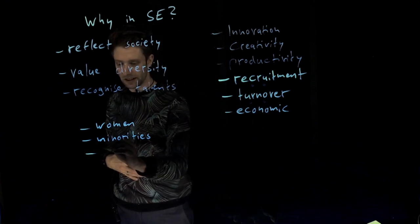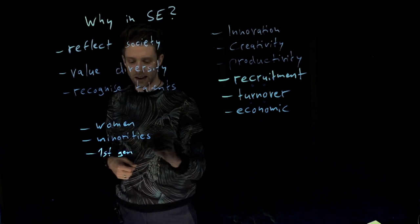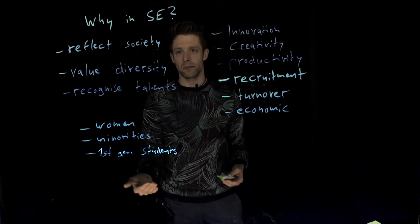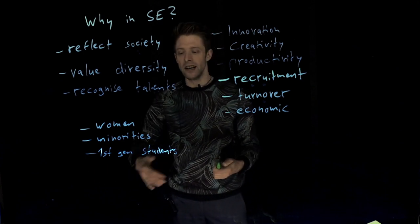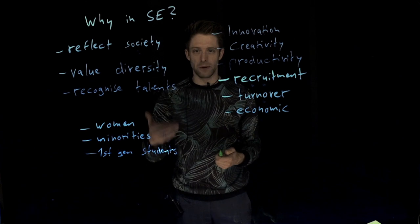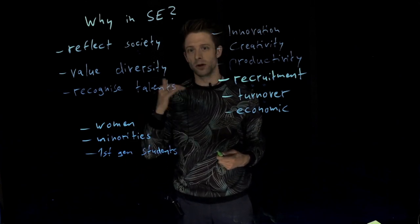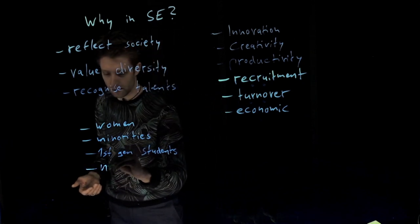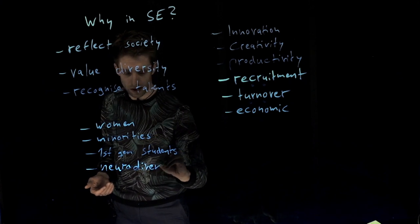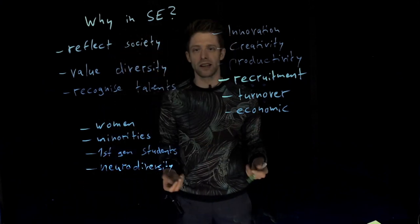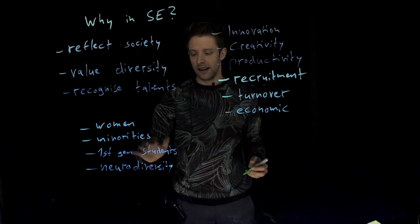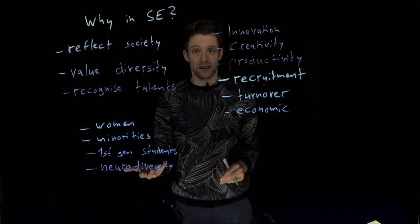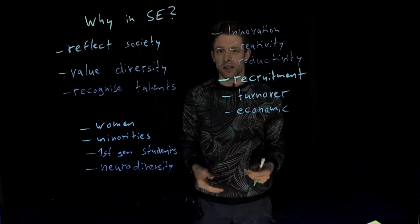Other groups that are often discriminated against or face challenges include first-generation students — those at university whose parents did not study — who very often simply don't have the same starting point, the same support at home, and that can easily translate into work life. They simply don't get the same good start as students from academic family backgrounds. Then there is neurodiversity: students with disorders that affect how they communicate — ADHD, autism spectrum, dyslexia — who may face challenges in work life. Many of these can be accommodated, at least to some extent, so they feel more welcome and can work more productively.